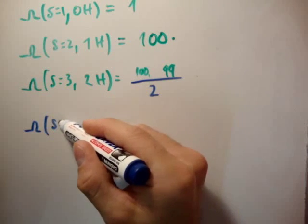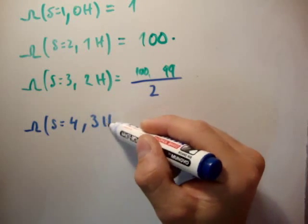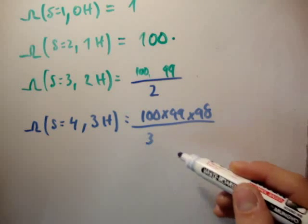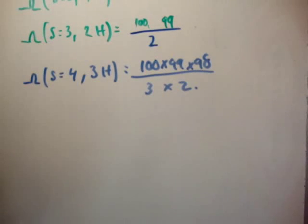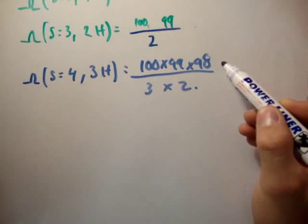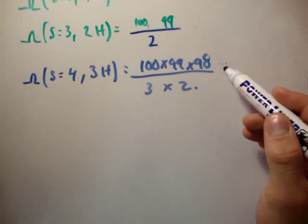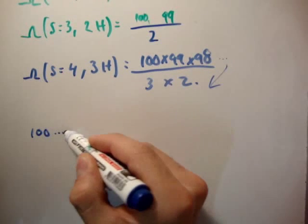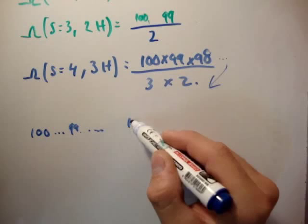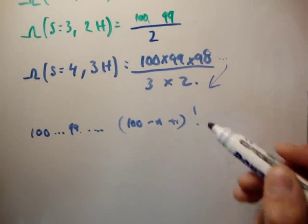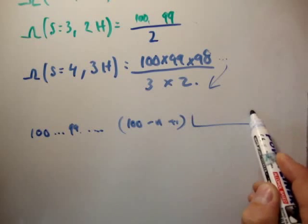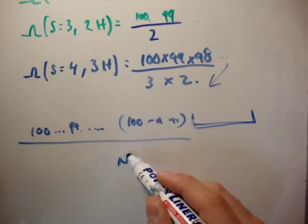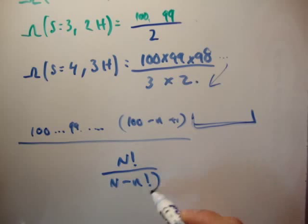The multiplicity of macrostate number 4, which is 3 heads, is going to be equal to 100 times 99 times 98, divide by 3 for the triplets, divide by 2 for the pairs. We can see where this is going, that we're going to get - I want this to become a factorial, and that means I have to divide by whatever is left in the sum. What we initially had was 100, 99, 98, the whole way down to 100 minus n plus 1. But we're missing all the terms down here to make the factorial, so just divide by those. And what we're going to get is N factorial divided by capital N minus n factorial.